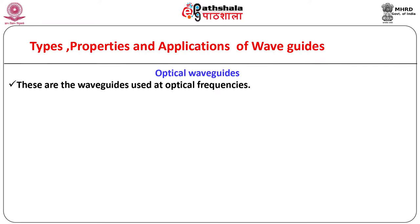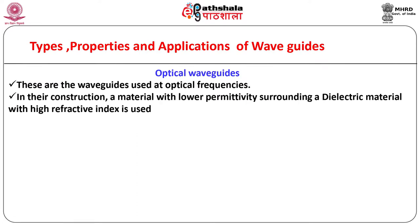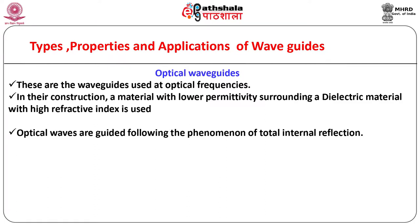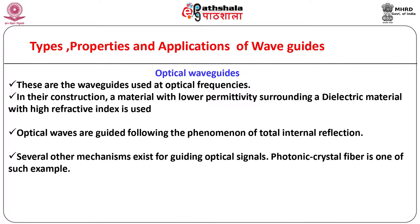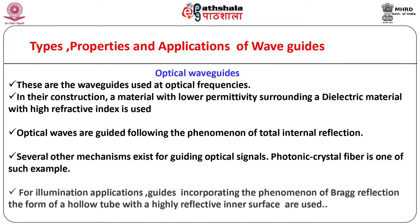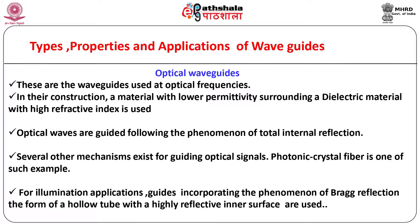We are familiar with many devices using optical fibers as optical waveguides — these are waveguides used at optical frequencies. In their construction, a metal with lower permittivity surrounds a dielectric material with high refractive index. Optical waves are guided following the phenomenon of total internal reflection. Several other mechanisms exist for guiding optical signals; photonic crystal fiber is one such example. For illumination applications, guides incorporating Bragg reflection in the form of a hollow tube with a highly reflective inner surface are used.